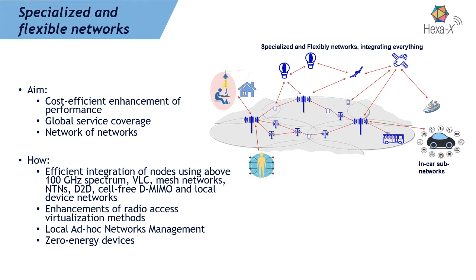The first area is specialized and flexible networks. As shown on the right-hand side, there is a multitude of different network types, access technologies, and enablers that need to be integrated into the overall 6G architecture. The goal is to enhance network performance by integrating these technologies cost-efficiently, while achieving global service coverage including remote areas, and supporting sub-networks within cars, factories, and similar environments.